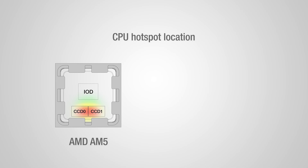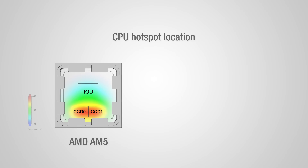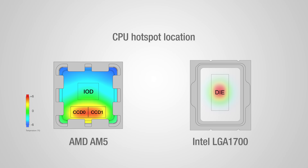Whilst LGA1700 CPUs tend to be highly concave, AMD AM5 CPUs by contrast stay relatively flat. At the same time, it must also be taken into account that AM5 CPUs have their CCDs shifted towards the south side of the socket, whereas LGA1700 processors require optimal contact in the centre.